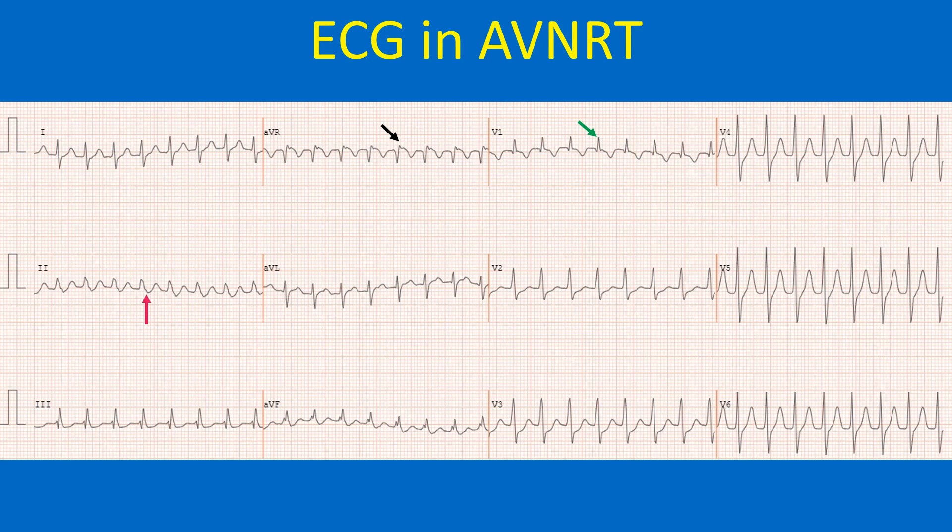Here the RP is shorter than PR — measured from the retrograde P to the next R wave — qualifying for the short RP tachycardia of the slow-fast variety of AVNRT.